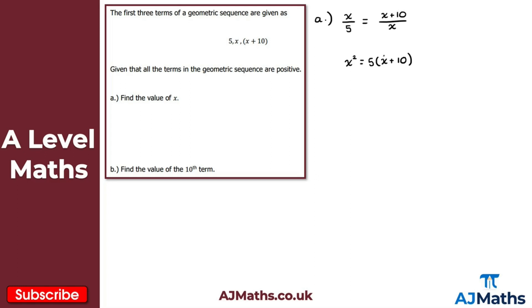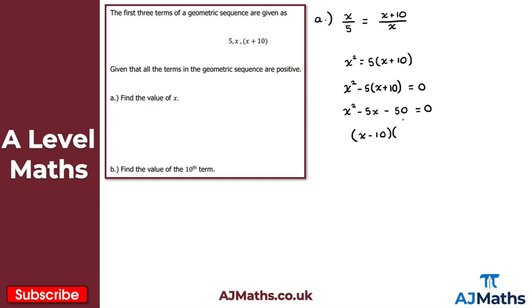To solve this quadratic, I set it equal to zero: x² − 5(x + 10) = 0. Expanding gives x² − 5x − 50 = 0. This factorises as (x − 10)(x + 5) = 0.